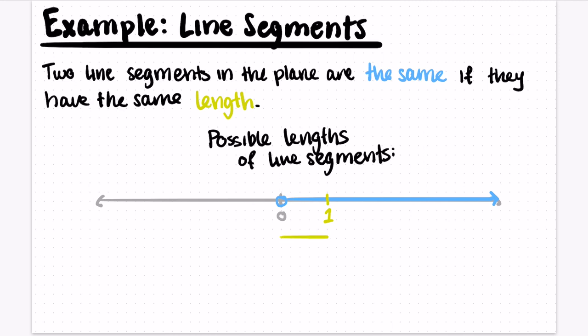So for example, one could be the length of a line segment, and it would look like this. As another example, the square root of 17 could also be the length of a line segment, and it would look like this. Our moduli space is this blue ray where we don't include zero.